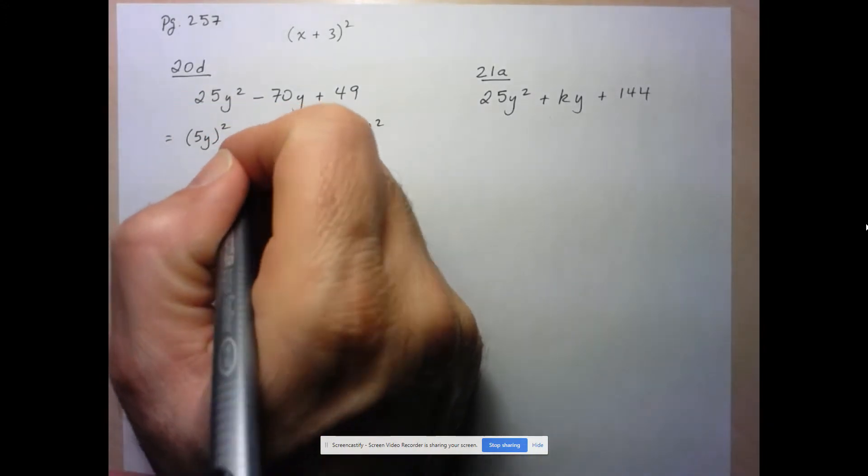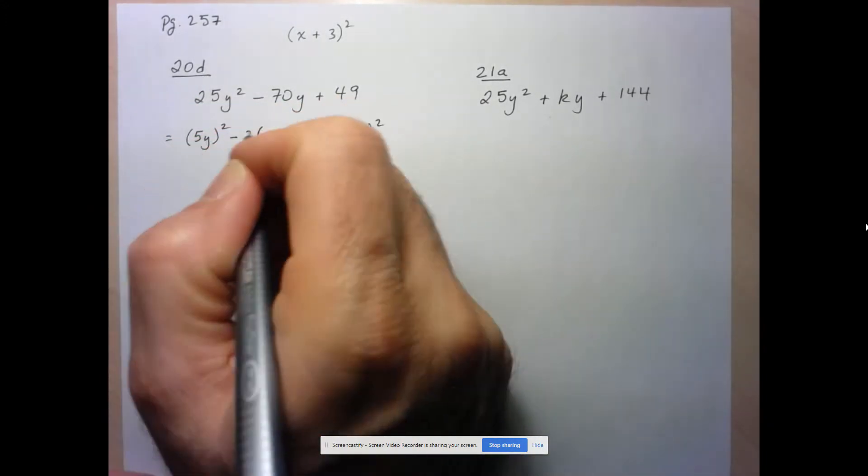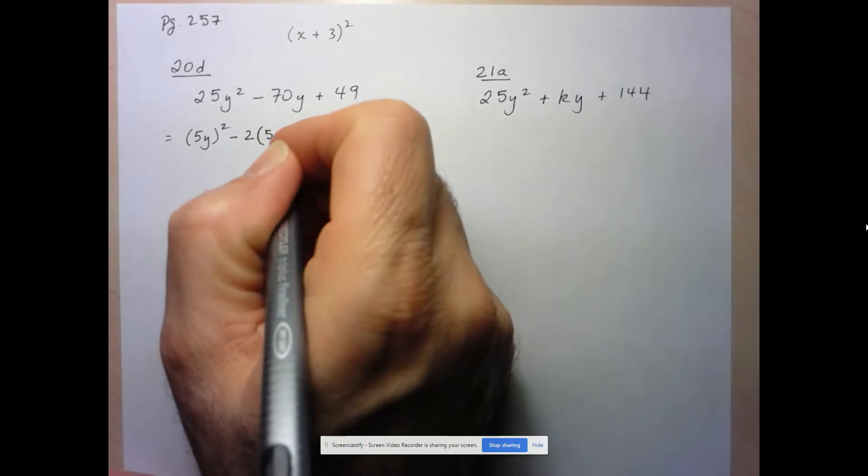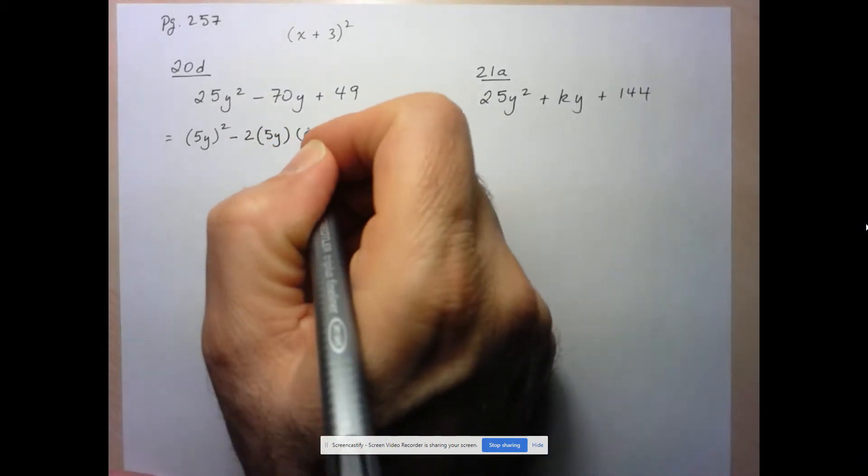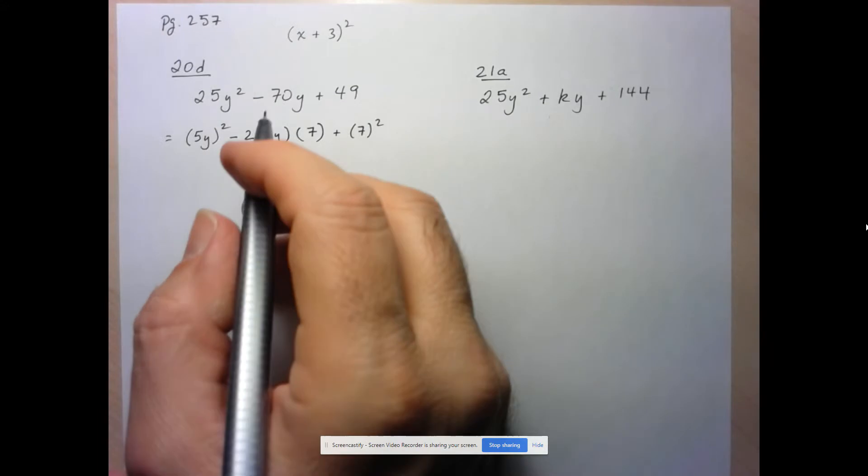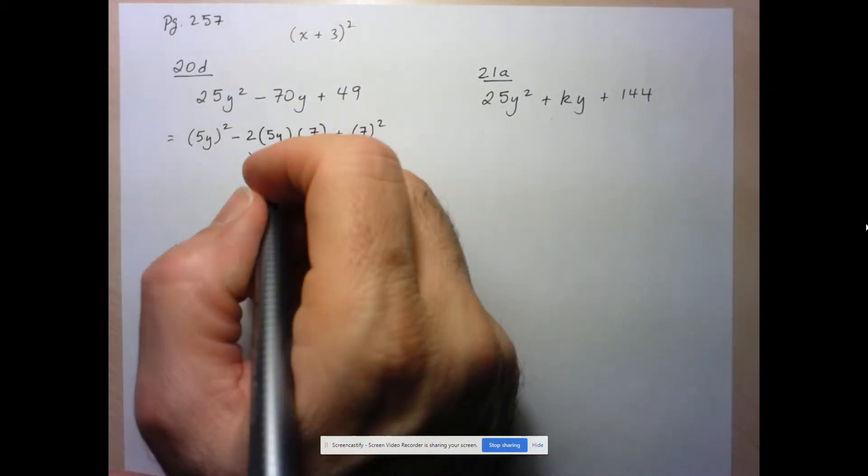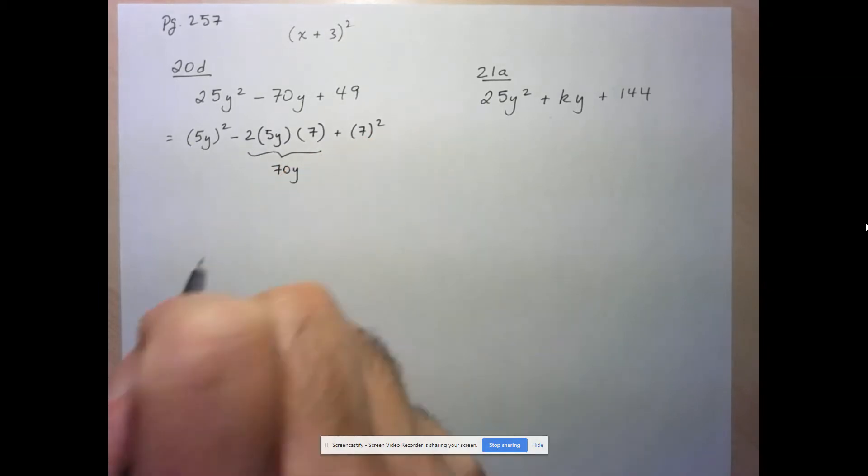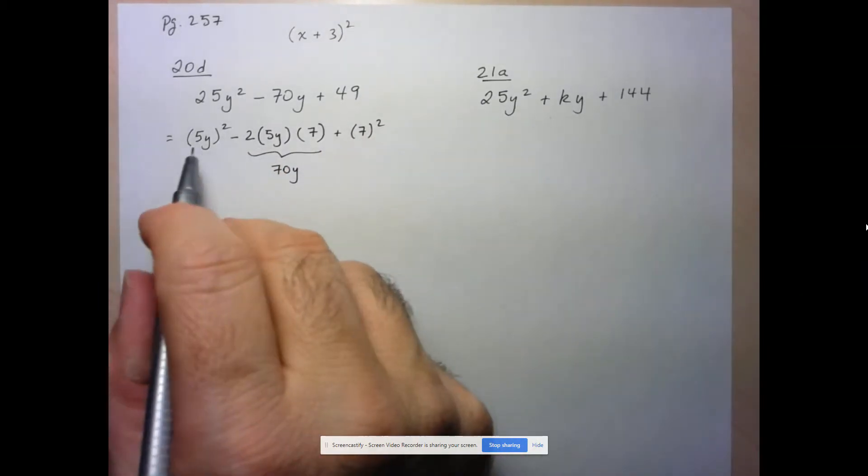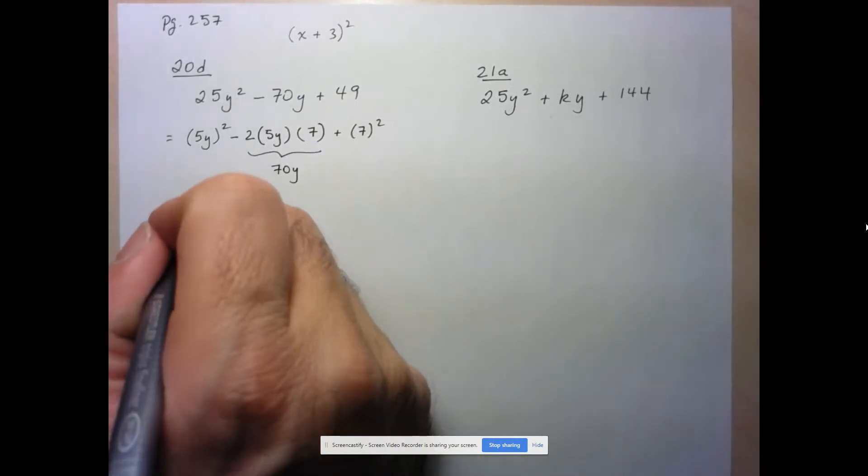If I write 2 times first, which is 5y, times last, which is 7, what do we get here? I get, well, 5 times 7 is 35, times 2, I get 70y. So this is indeed a perfect square trinomial, and what does it factor to?